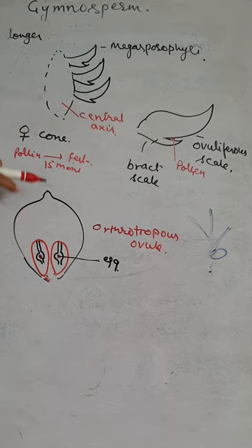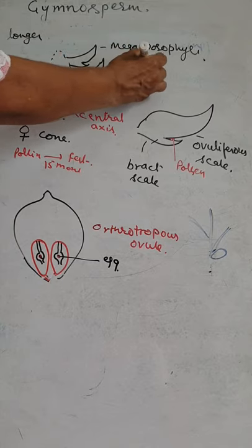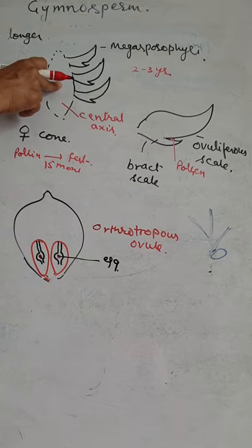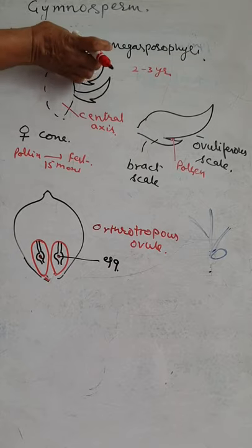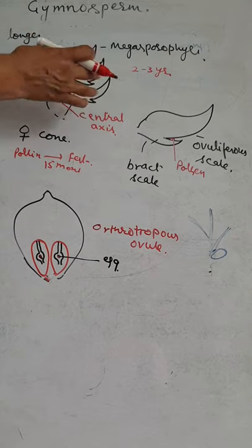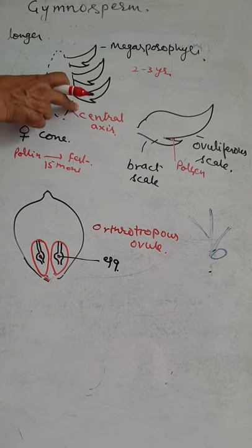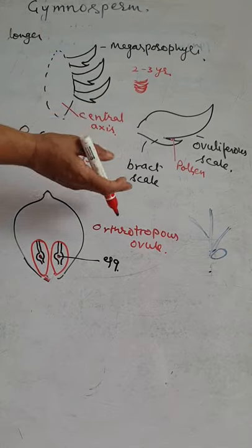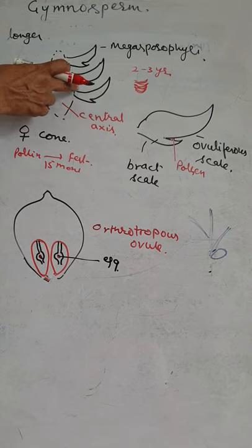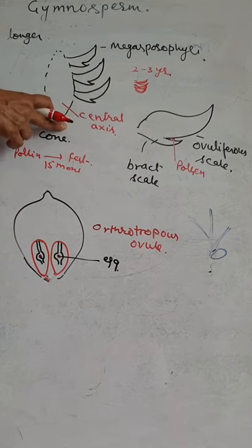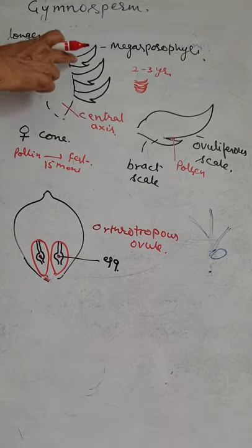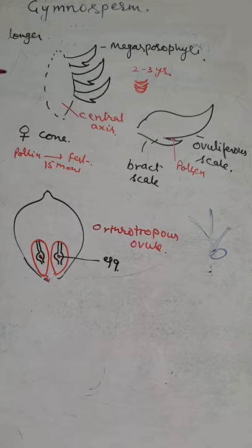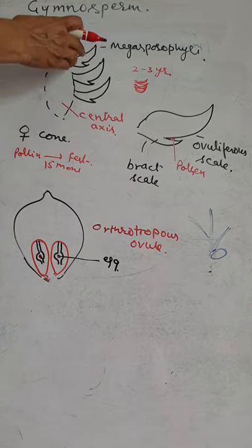The female cones are developed within 2 to 3 years. When newly formed, the sporophylls are compactly arranged. As the cone matures in the second and third year, spacing develops between the sporophylls. So in the first-year cone the leaves are very close, and as it grows, space and distance between the sporophylls increase.